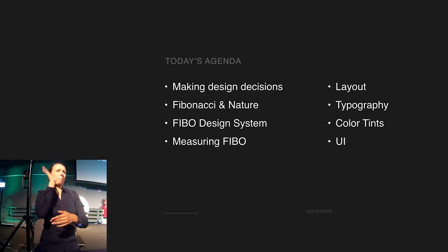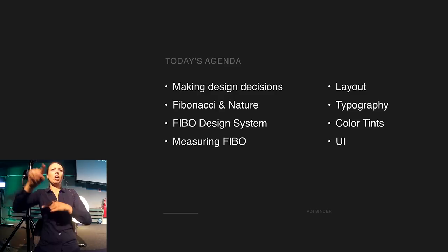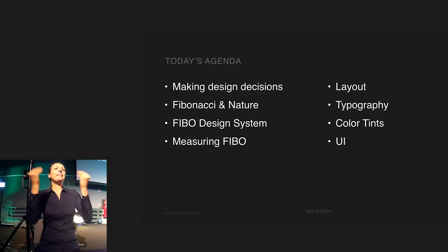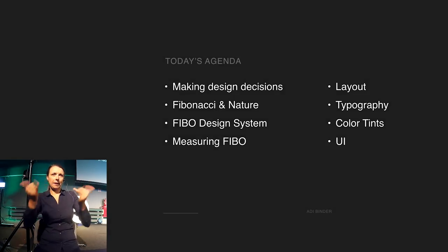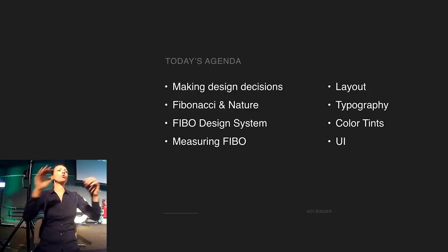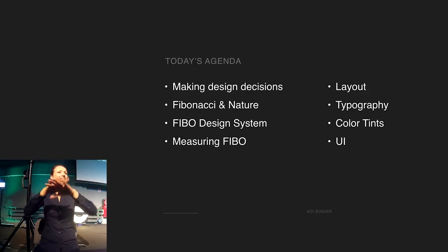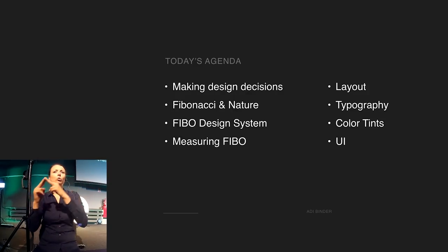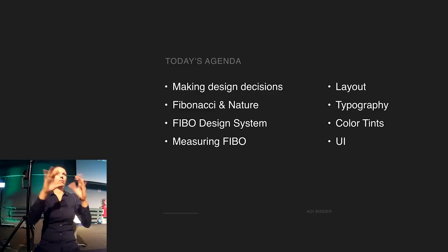We'll get back to that as we continue the talk, as we search for that perfect pixel. So in today's agenda, we'll be talking about making design decisions, how we make design decisions, Fibonacci and nature, what is the Fibo design system and how we use it to measure hierarchy and aesthetics, layout, typography, color, tints, and UI in general.